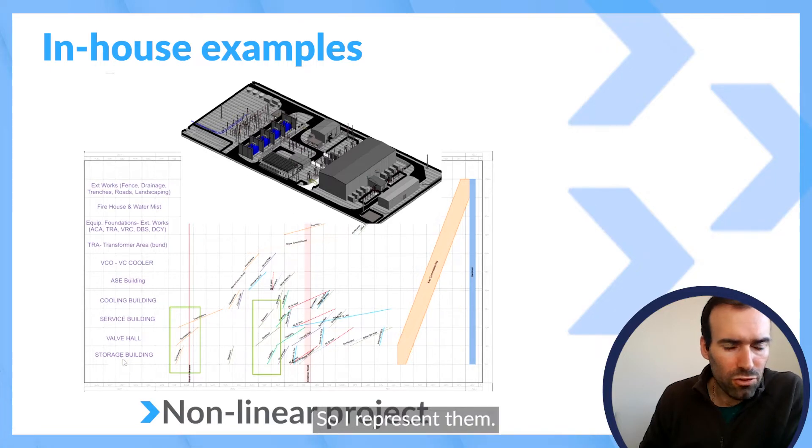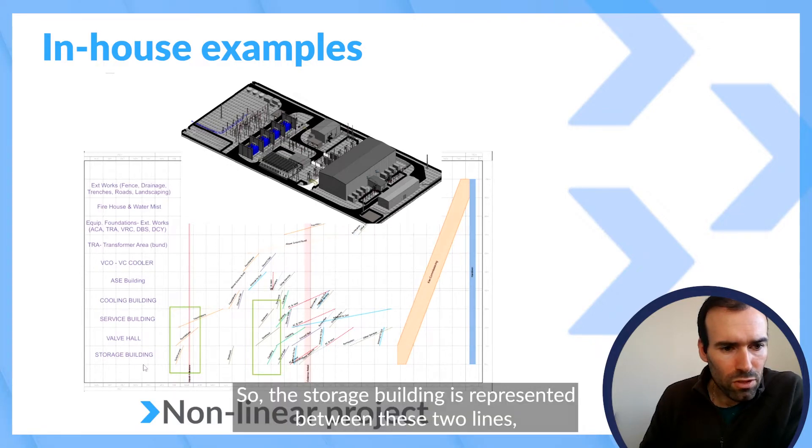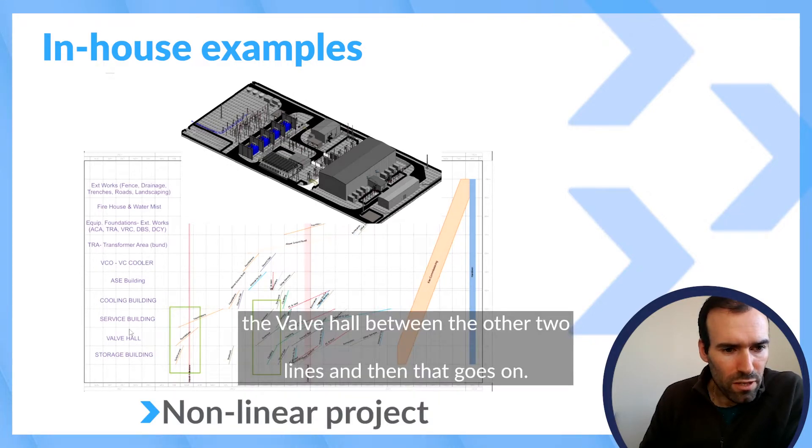So I represented them, so each building in between these two horizontal lines. So the storage building is represented between these two lines, the valve hall between the other two lines, and then that goes on.